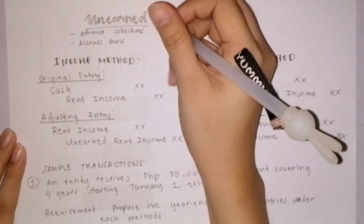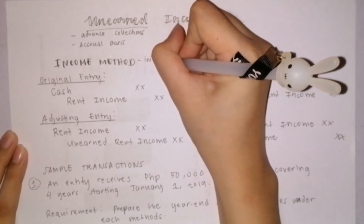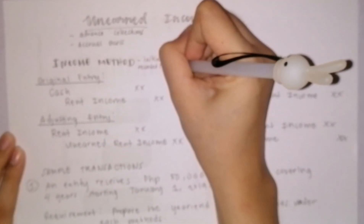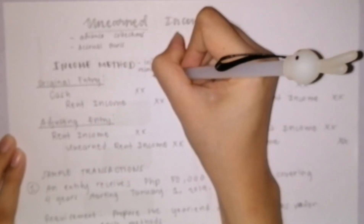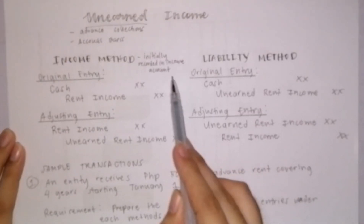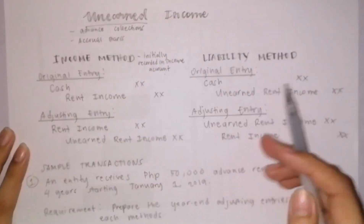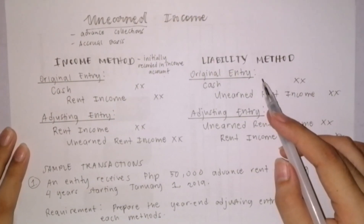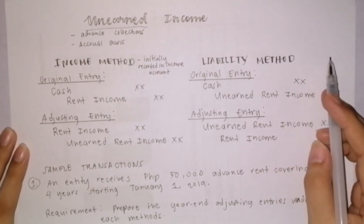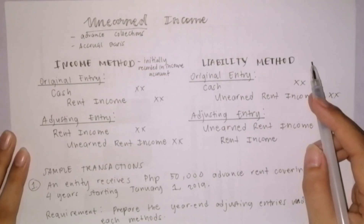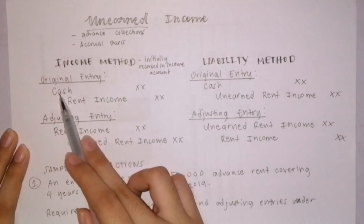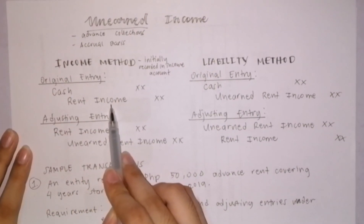In the income method, cash receipts or yung mga advanced collections na nare-receive natin are initially credited to an income account. Let us assume that a business is about leasing activities or renting out. So, every time they receive advanced collections or advanced rental payments from their tenants, they will record rent income. The entry to record the cash receipt: we debit cash and we credit rent income.